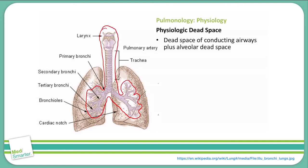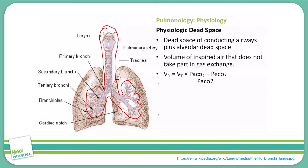We can calculate our physiologic dead space using this formula. The dead space volume equals the tidal volume multiplied by the arterial partial pressure of CO₂ minus the expired air partial pressure of CO₂, divided by the arterial partial pressure of CO₂.